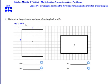So I would use multiplication. 9 times 7 equals 63. So I have 63 squares inside this rectangle. So my area is 63 square units.